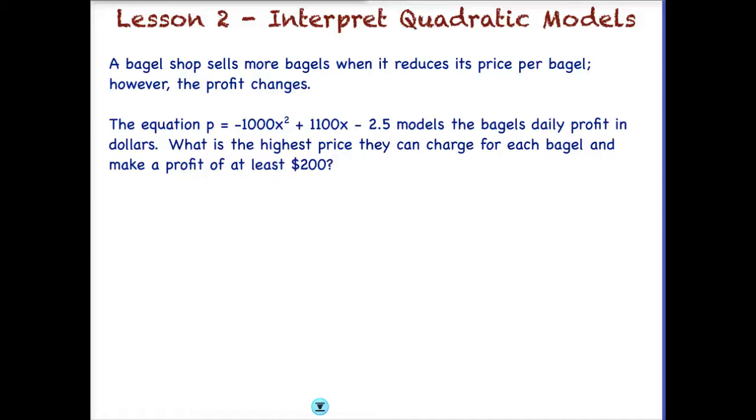The equation, and here's our equation, that models the bagel's daily profit in dollars. And again, this takes into account all of our expenses to produce the bagels as well as what we would get back in depending upon our sales price. So P is again our profit, and X is what we would charge per bagel.